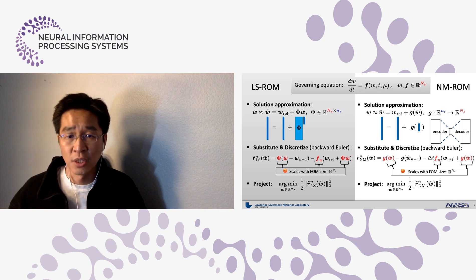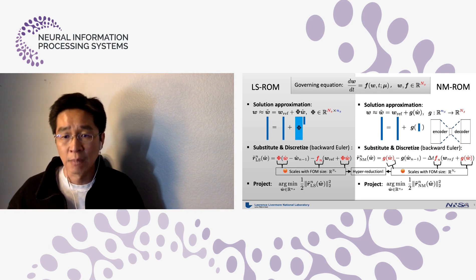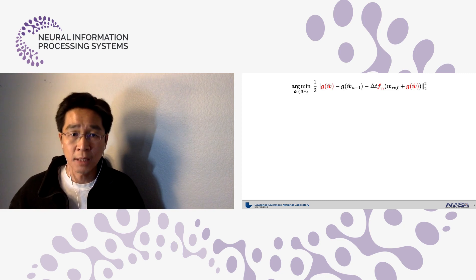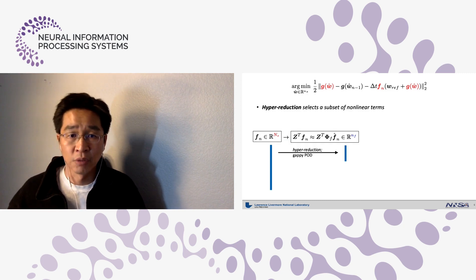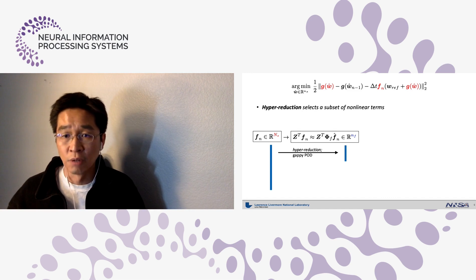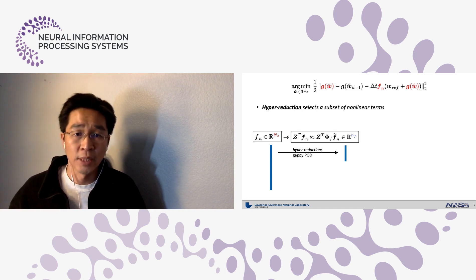To resolve these serious problems, we developed a hyperreduction technique. In hyperreduction, we try to reduce the cost of the following three nonlinear terms shown in red. Our hyperreduction techniques first select a subset of nonlinear terms to avoid the evaluation of the full size. We do that by following GAPI-POD procedure.